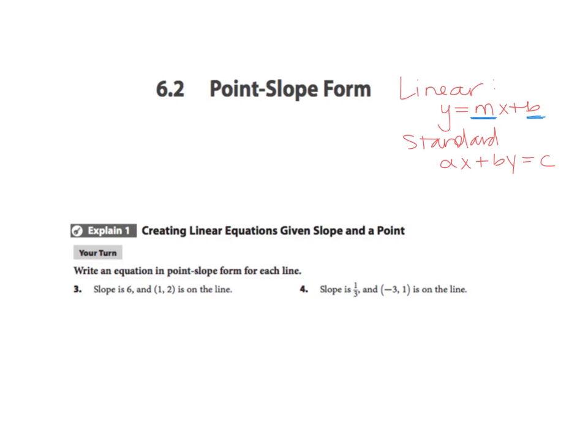Point-slope form is still going to be linear, so we're not going to have any exponents or anything else, but it is going to tell us a point on the line and the slope. The point-slope form itself looks like this: y minus y1 equals m times x minus x1. I'm going to add one more thing to this to help it make some sense to you.